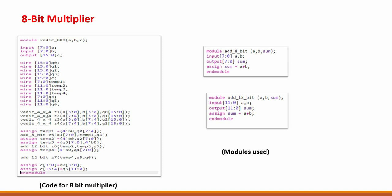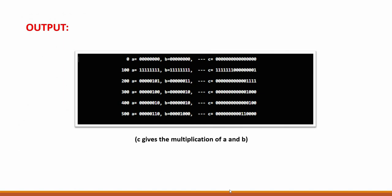Here is the circuit for the 8-bit multiplier using four 4-bit multipliers. Defining inputs and outputs, this is based on the circuit we just saw. We use 8-bit and 12-bit adders, for which the modules are separately created. Finally, we get our 16-bit answer. This is the simulation code I ran. We will also look at the test bench code in a few minutes.